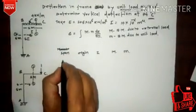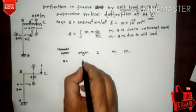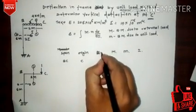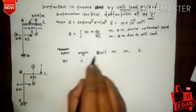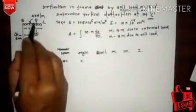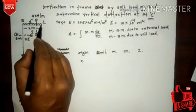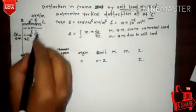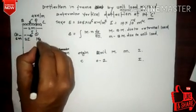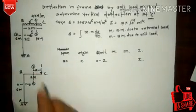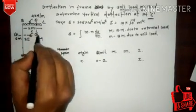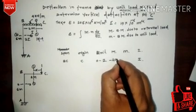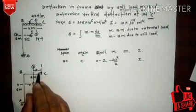For the BC span, take the origin at C. The limit is from 0 to 2, and I is equal to I. Taking distance X from the origin, the bending moment M at distance x is: 4 × x × x/2, which creates a hogging bending moment, so M = −4x²/2. For small m, the unit load creates: m = −x.